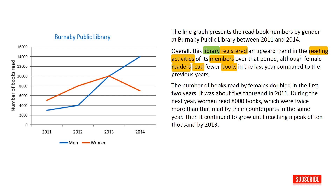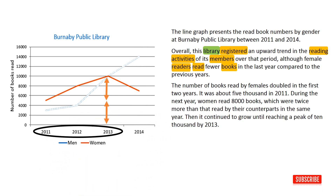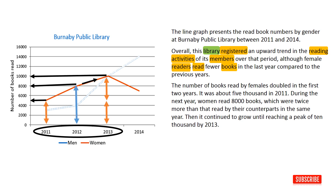The number of books read by females doubled in the first two years. It was about 5,000 in 2011. During the next year, women read 8,000 books, which were twice more than that read by their counterparts in the same year. Then it continued to grow until reaching a peak of 10,000 by 2013. Here I made some comparisons in the second and third paragraphs — in the overview paragraph the last year compared to the previous years, and in the third paragraph the number of books read by males and females compared to each other.